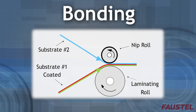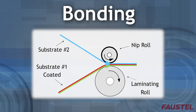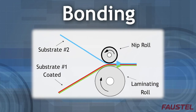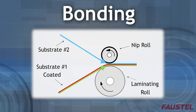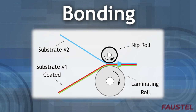Receptivity to bonding is determined by the presence of some adhesion-promoting element. This may be as simple as first exposing the surface to corona treatment, or as complex as one or more chemical pre-treatments followed by the application of a cross-linking adhesive.